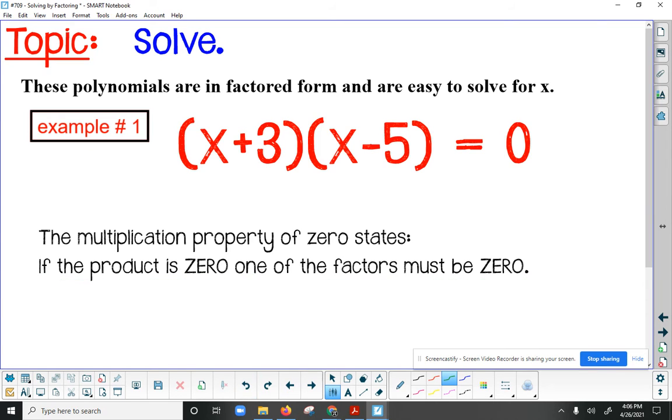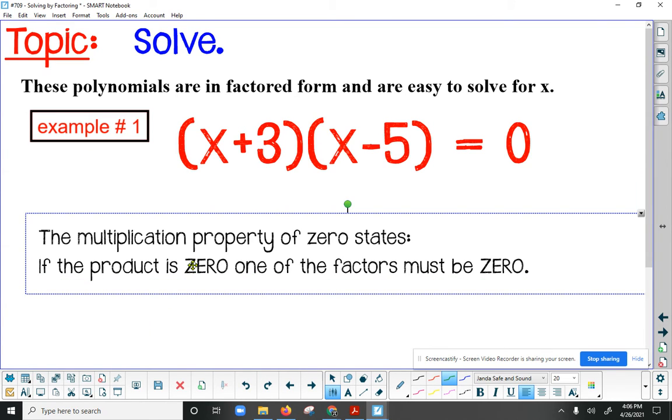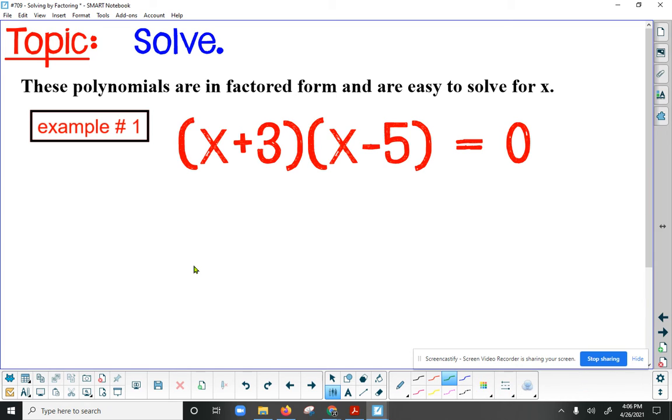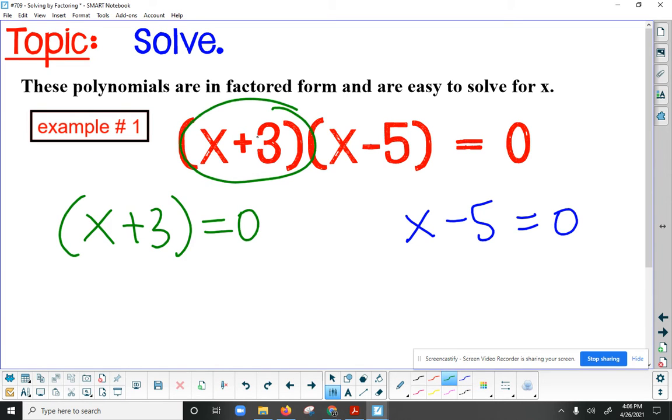So one of these factors must be zero. So watch how I translate that. One of these factors, either the first one has to be equal to zero, or the second one has to be equal to zero. So you see what I just did there? I took factor number one and set it up as its own equation equal to zero. Then I took factor number two and set it up as its own equation and made it equal to zero, because one of these has to be zero.